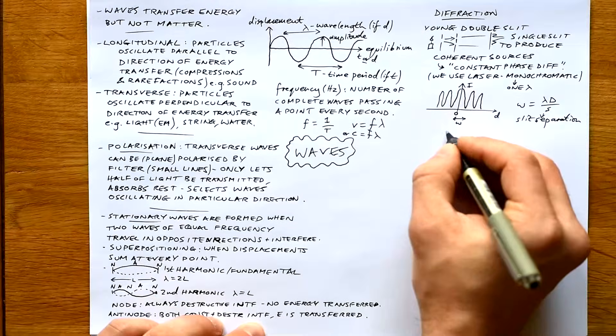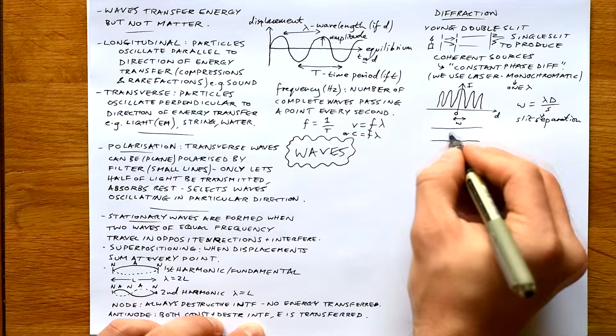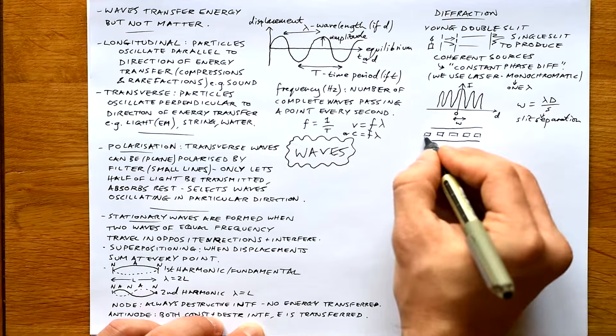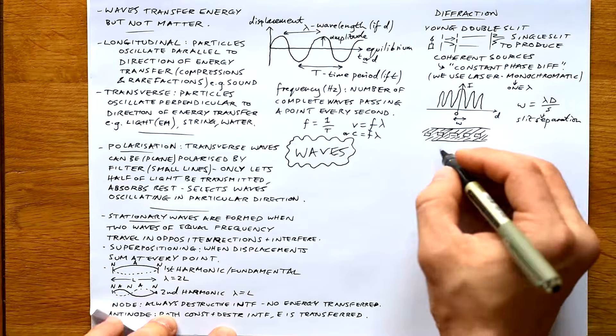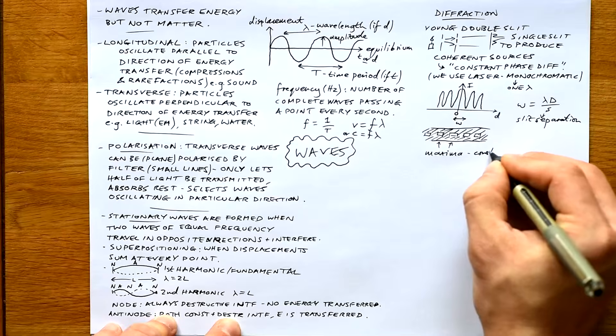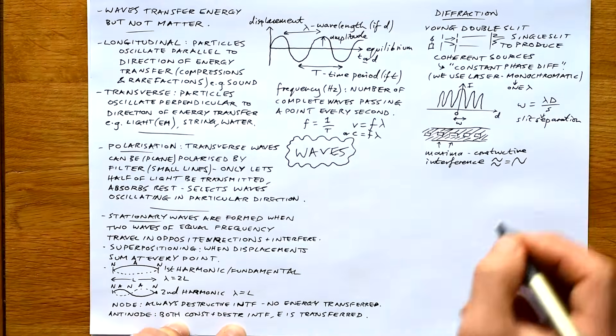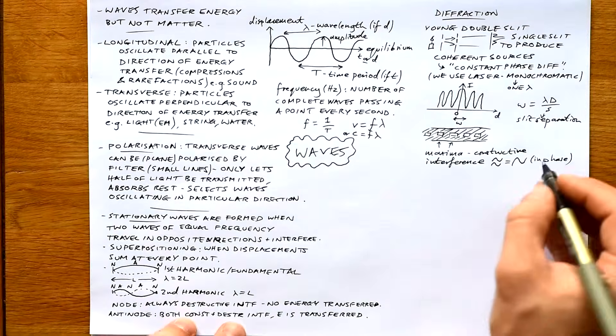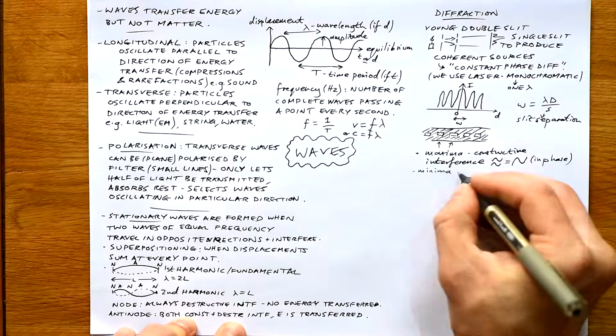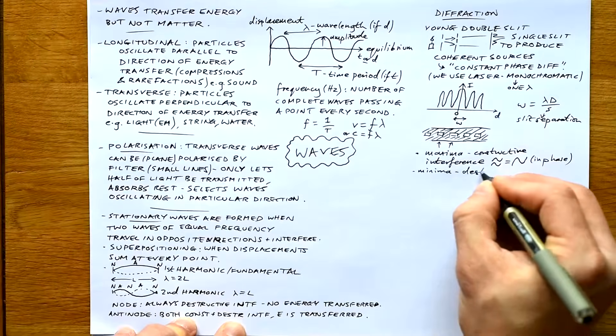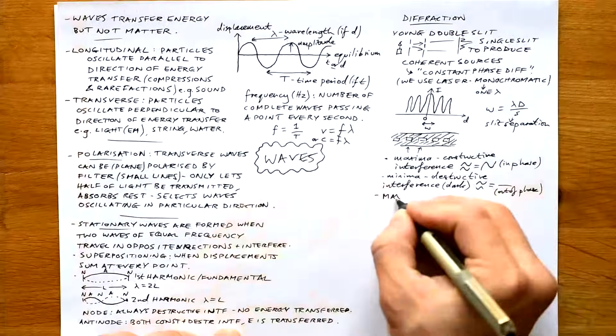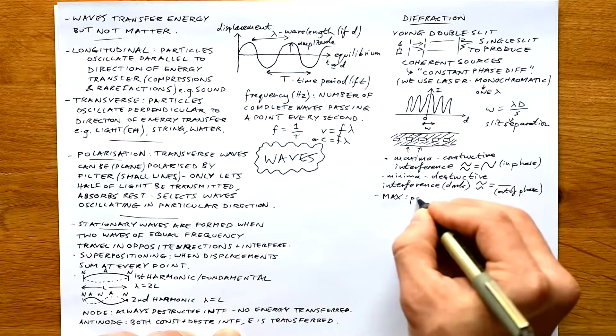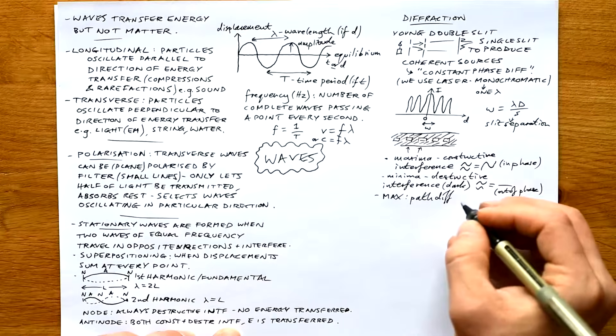In reality, what does this look like? Well it looks like bright spots with dark spots in between. We also call these maxima, and that's where we get constructive interference - in other words, two waves arriving in phase. They reinforce each other, so making a super wave, so that's why we see a bright spot.